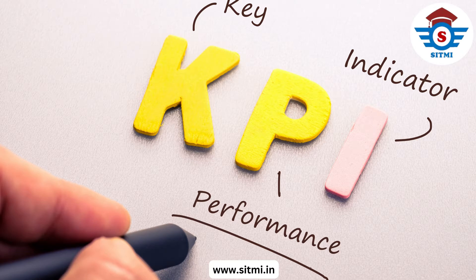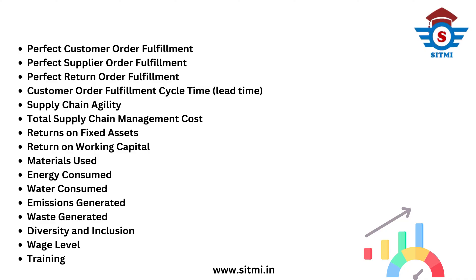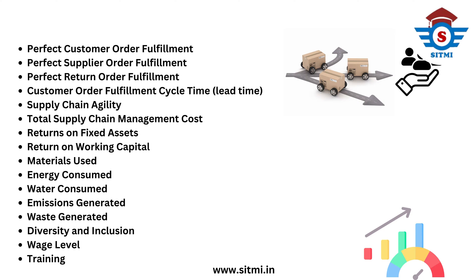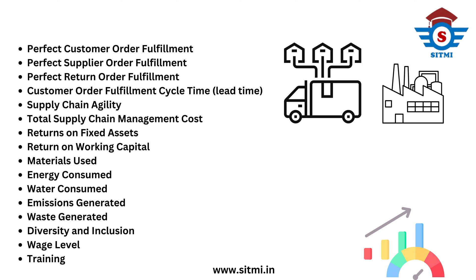Now we will talk about the different KPIs that are measured with the SCOR model. The SCOR model has already defined its own set of rules to measure certain KPIs across the industry. The first KPI is perfect customer order fulfillment, which basically talks about customer order delivery performance across all the customer orders that have been fulfilled.